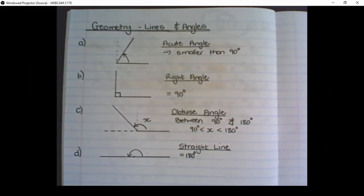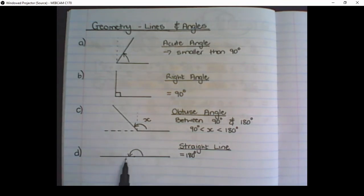The fourth one can be considered a straight angle or a straight line. What it means is the angle formed is exactly 180 degrees, and that forms a perfectly straight line.